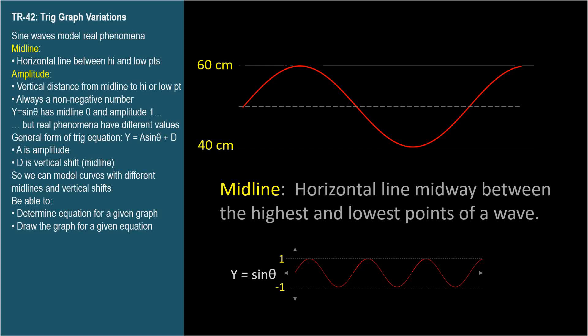It's time for some sine wave vocabulary. Midline: the midline is the horizontal line midway between the highest and lowest points of a wave. For a simple sine wave, the highest point is positive 1 and the lowest point is negative 1, so the midline of the sine wave is right between, the line y equals 0.